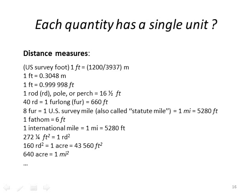Does that mean each quantity has a single unit? Wrong. Unfortunately, between disciplines and between different countries, there are many units for a single physical phenomenon. For example, distance: foot, rod, pole, perch, furlong, fur, fathom — which is basically depth in the sea — international mile, acre, etc. Many other phenomena like pressure also have many units you need to be able to work with. So you really need to pay attention to your units when working as an engineer or scientist.